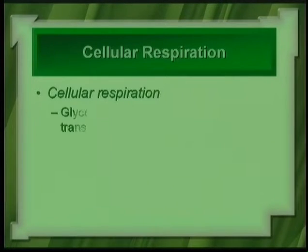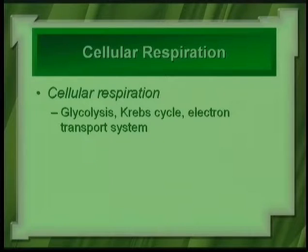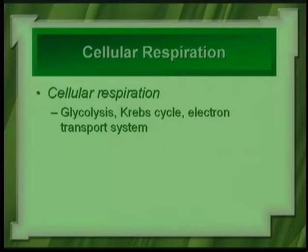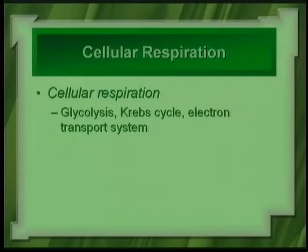What happens during cellular respiration? You have three parts: glycolysis, the Krebs cycle, and the electron transport chain. Glycolysis — glyco means something sweet, lysis means to split or cut — is the splitting of the glucose molecule. A six-carbon glucose forms two three-carbon pyruvates or pyruvic acids.